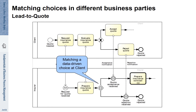We see that the event-based gateway is actually matching the XOR split on the client side. Usually when we have such a pattern, one party takes an active decision using an XOR split, while the other interacting party uses an event-driven gateway to indicate dependence on the decision that somebody else is taking.